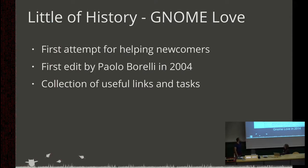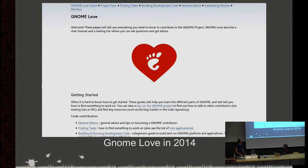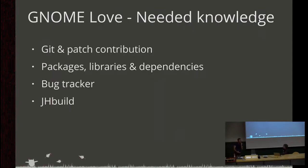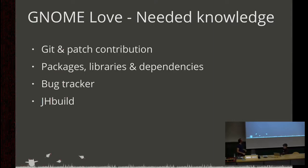This is how it looked in 2014, before we started reconverting this initiative. You can see the iconography — it was like a heart because of the 'love' part. One problem was that the guide assumed knowledge. It was just links to documentation, but it assumed you already knew how to do commits, branches, and contribute patches without explaining those steps. Also, packages and dependencies: for installing a new module you need to install all dependencies — something the newcomer might not know — but the guide assumed that knowledge without providing the information.